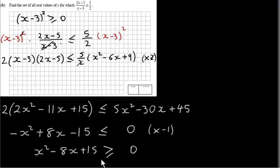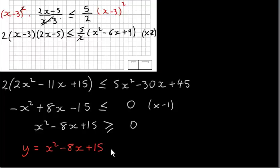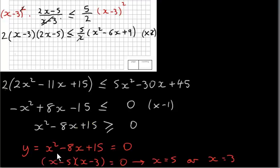To solve the quadratic inequality, we first look at the equation y = x² - 8x + 15 and solve x² - 8x + 15 = 0. The solutions of this quadratic equation will help us find the solutions of the inequality. Fortunately, this factors as (x - 5)(x - 3) = 0, giving solutions x = 5 or x = 3.